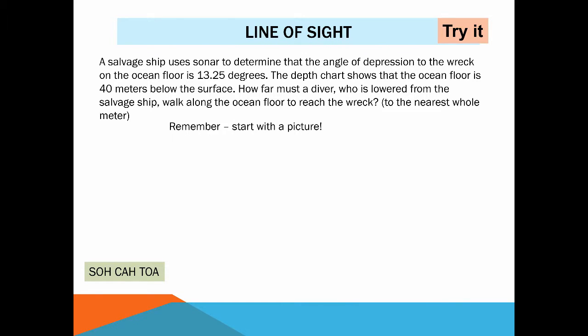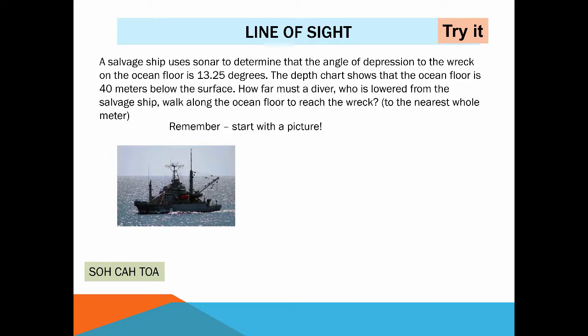First things start with a picture. Now you would just maybe scribble a little picture of a boat on your paper. So here's the salvage boat and I know that if somebody's standing there at the front of the boat looking down towards that wreck that's their sight line and the angle between the horizontal and the sight line is 13.25 degrees.